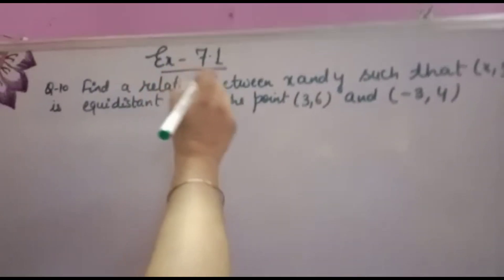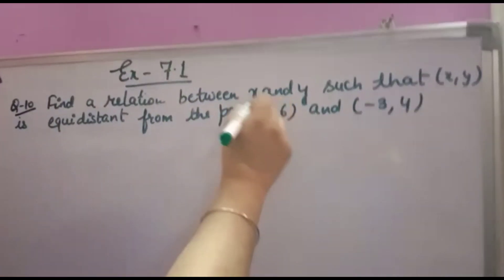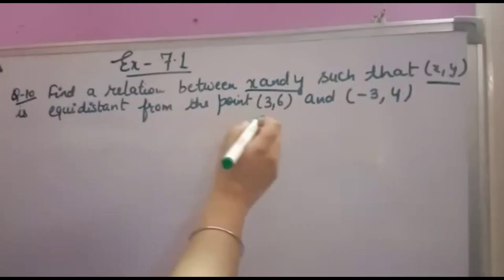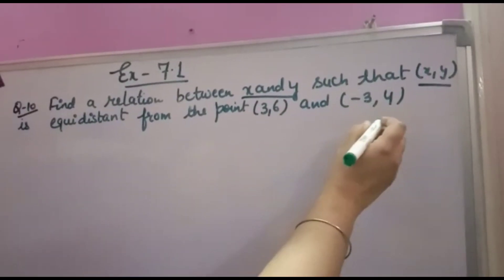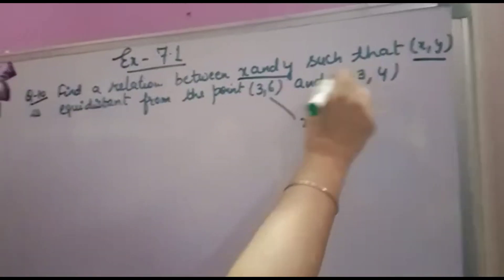Welcome back to your favorite channel Math Helper. XA 7.1's equation number 10: Find a relation between X and Y such that (X,Y) is equidistant from the points (3,6) and (-3,4). Point (X,Y) is equidistant from these points means the distance to both points is the same.